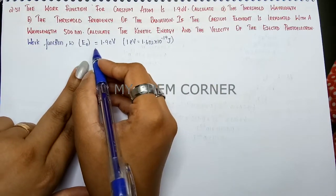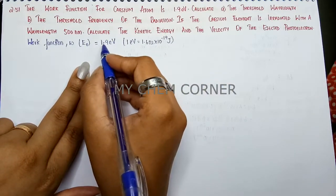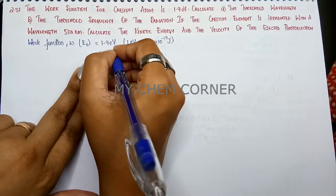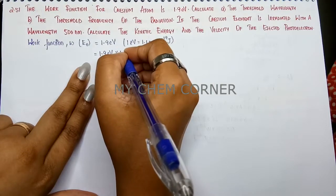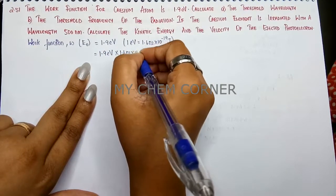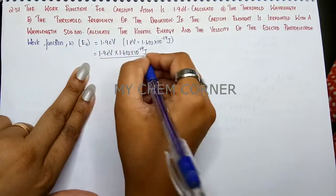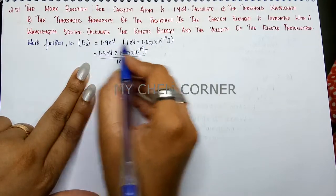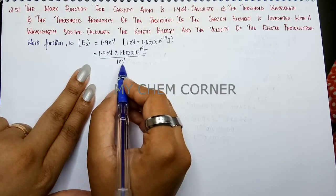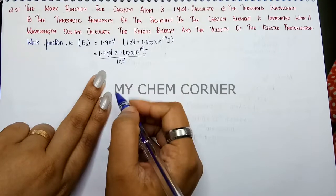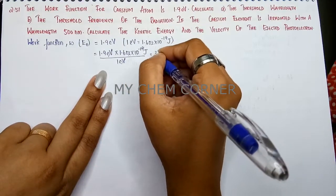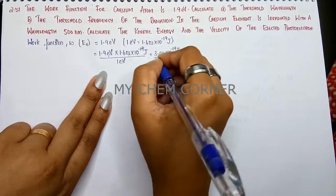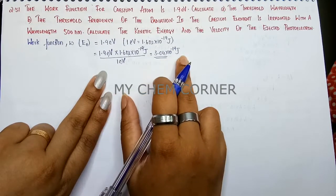To convert, we multiply 1.9 electron volt by 1.602 × 10⁻¹⁹ joules per 1 electron volt. The electron volt units cancel out, giving us 3.04 × 10⁻¹⁹ joules. So now we have the work function in terms of joules.